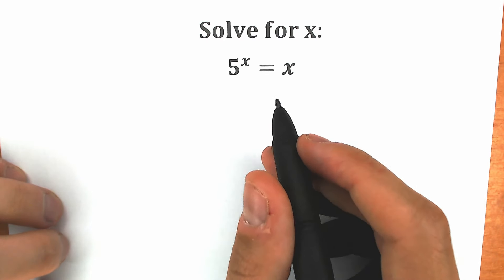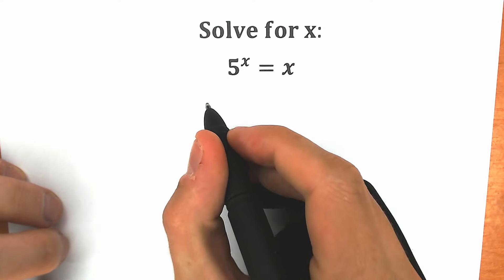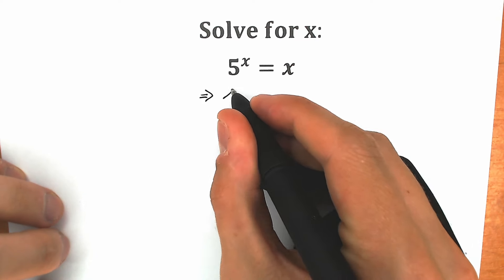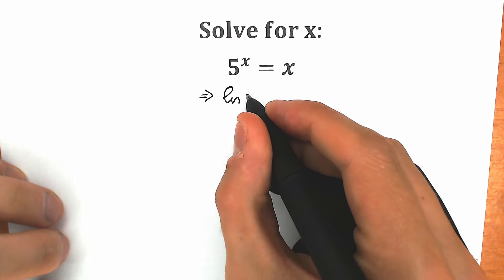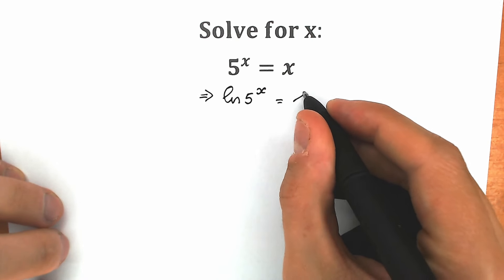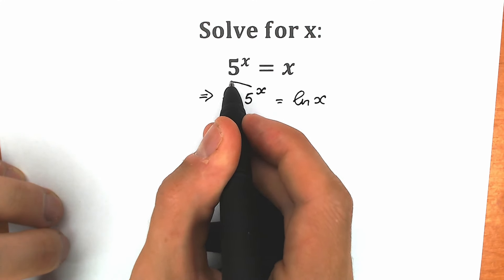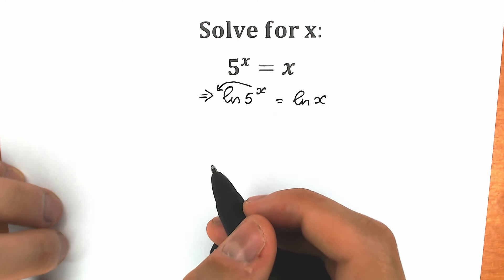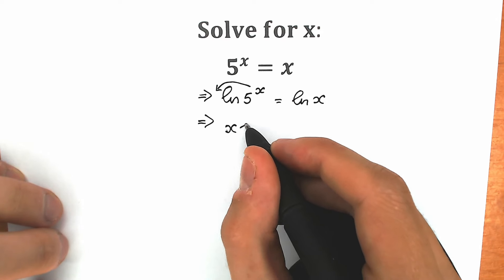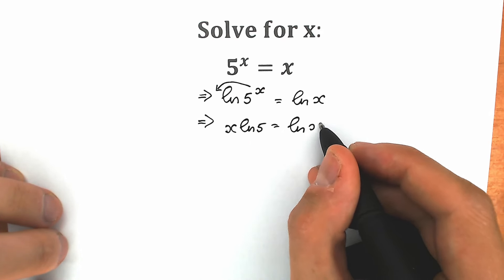First of all, let's apply natural log on both sides, because then this x will come down. Our first step is to apply natural log. So we have natural log of 5 to the power x on the left side, and natural log of x on the right side. This x will come down using the main log property. As a result, we have x times natural log 5 equal to natural log x.